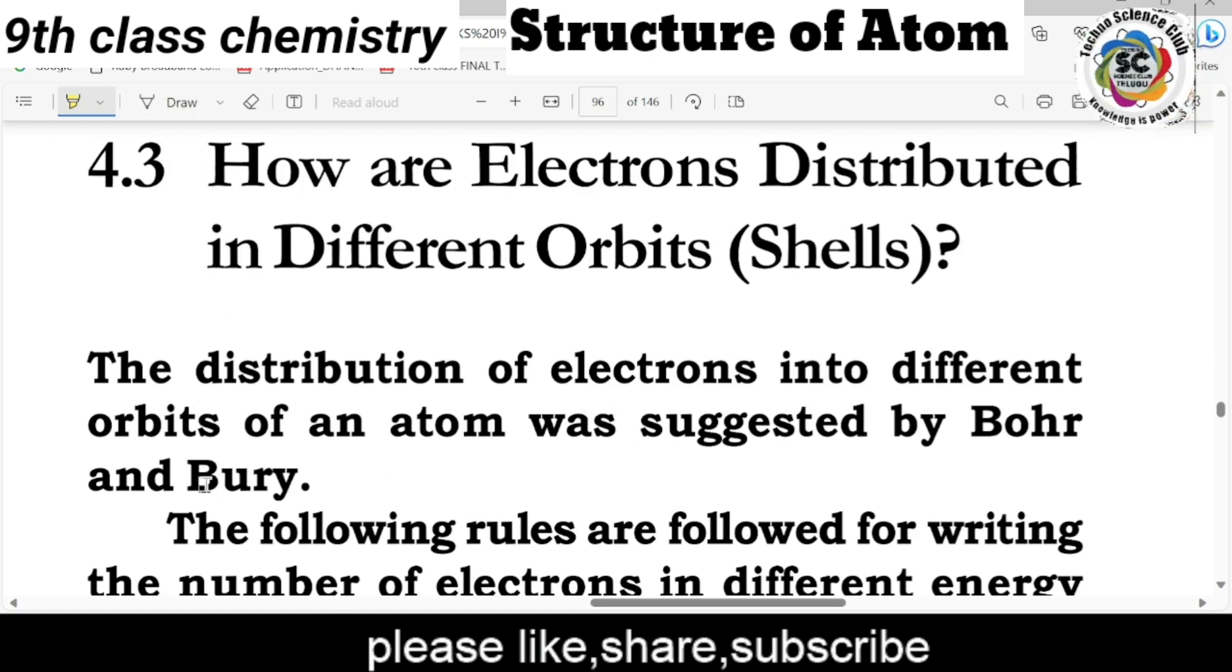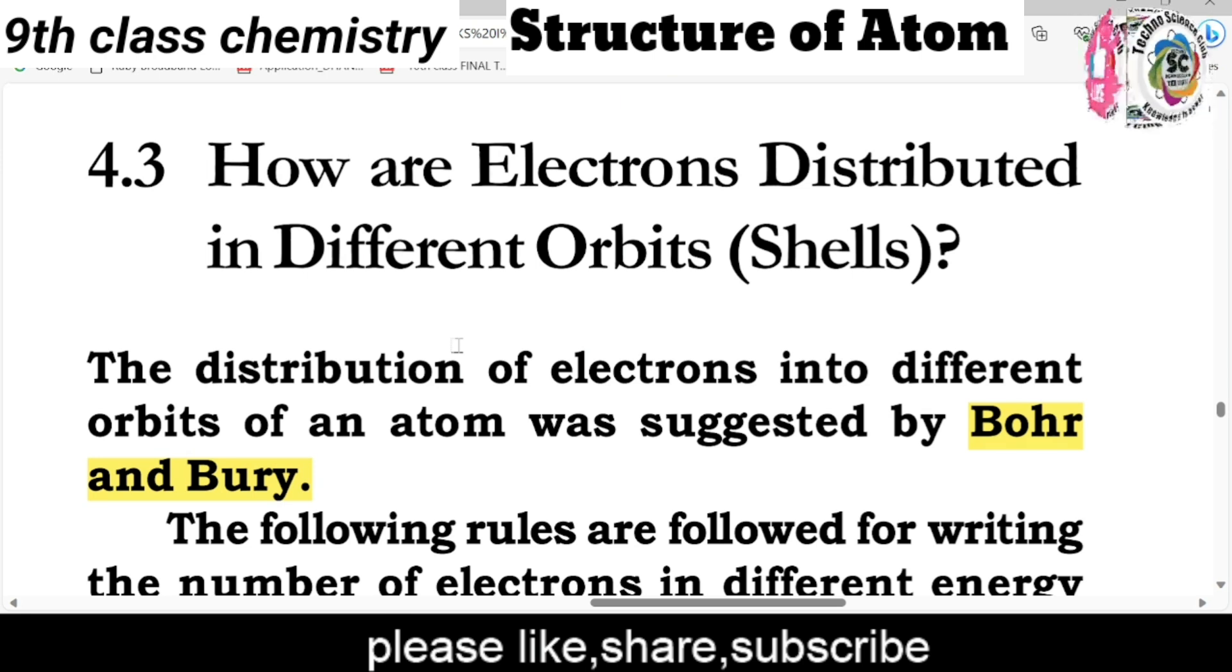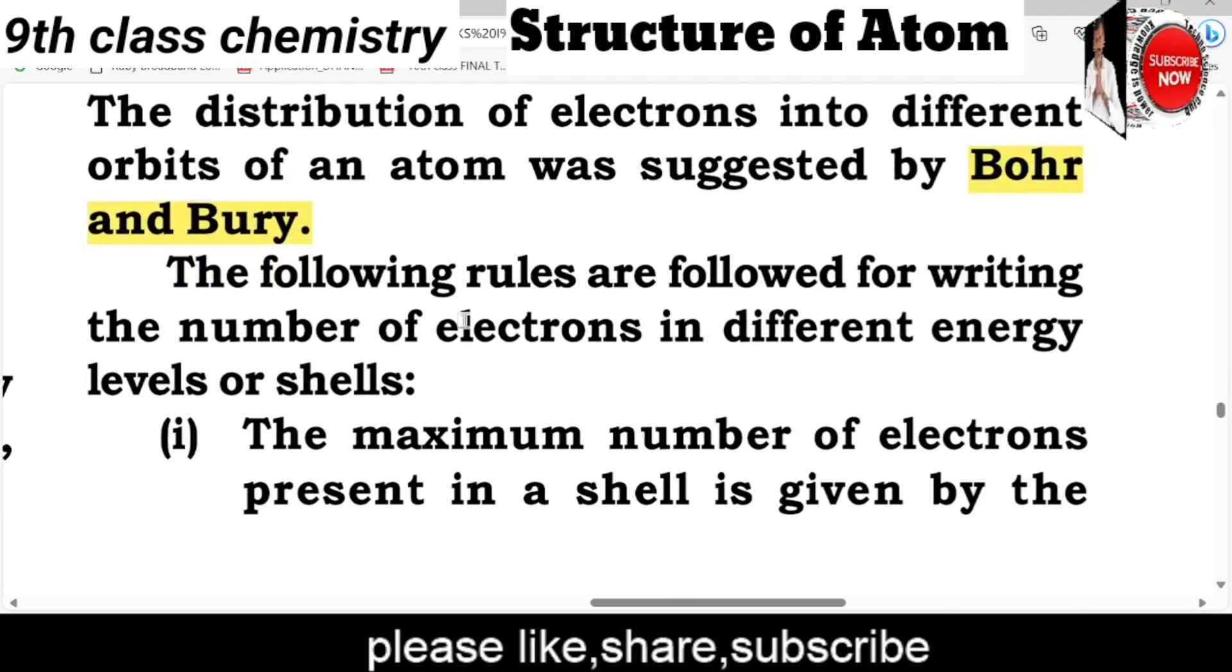The distribution of electrons in different orbits of an atom was suggested by Niels Bohr and Bury. Electrons move in discrete paths or discrete orbits, also called shells or energy levels. The following rules determine how many electrons can be accommodated in each orbit or shell. This is called electron distribution.